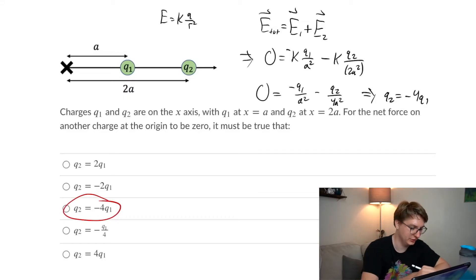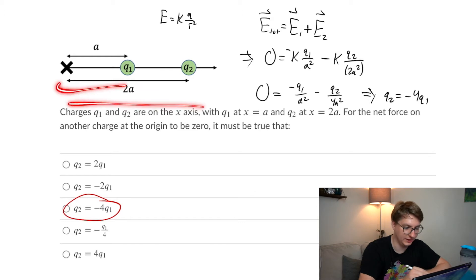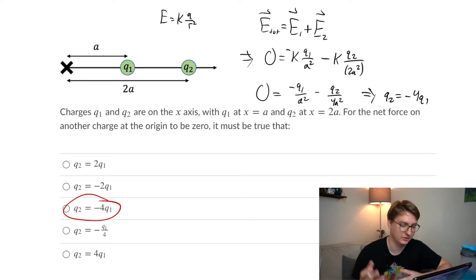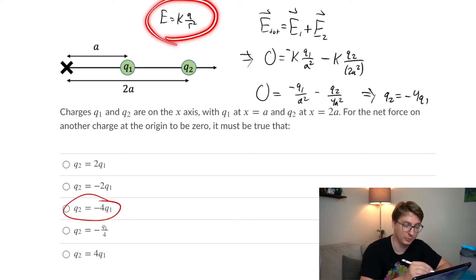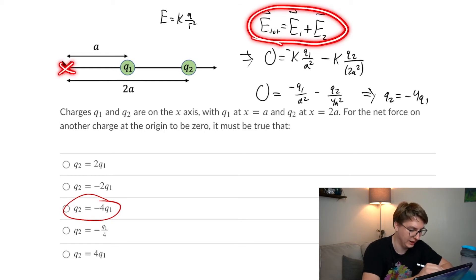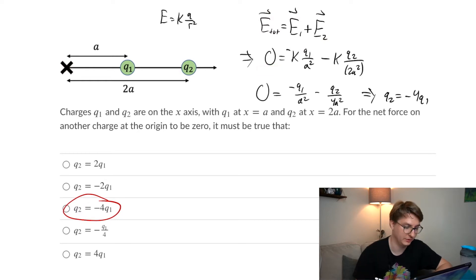First question: charges Q1 and Q2 are on the x-axis at locations A and 2A. For the net force on another charge at the origin to be zero, we need to figure out some relation between the charges. You could do this with forces — it's the same with electric field. So if the electric field is zero at a point, any charge placed there will experience zero force. We write the magnitude of the electric field and set the two contributions equal to zero at that point, being careful about signs.